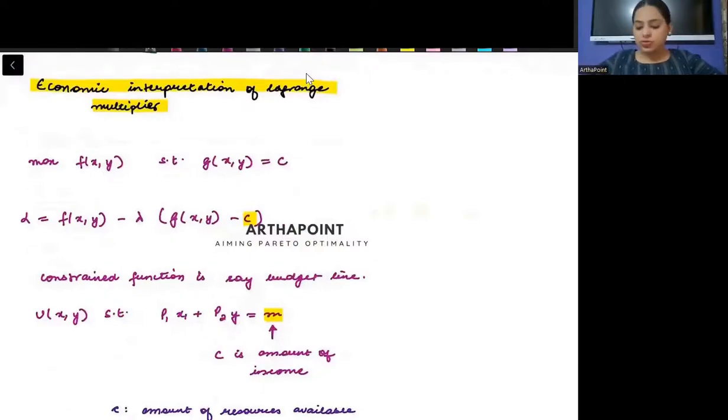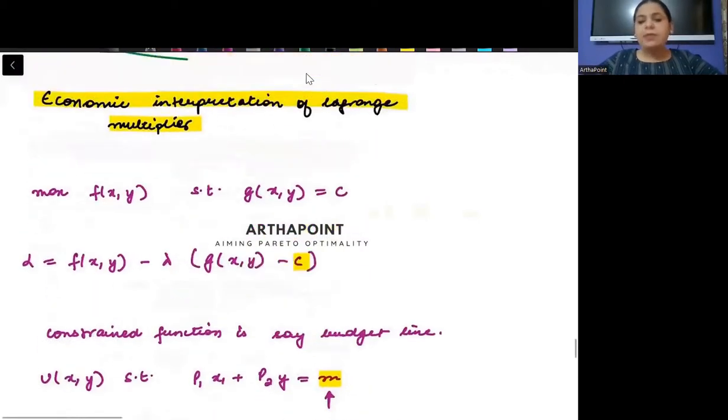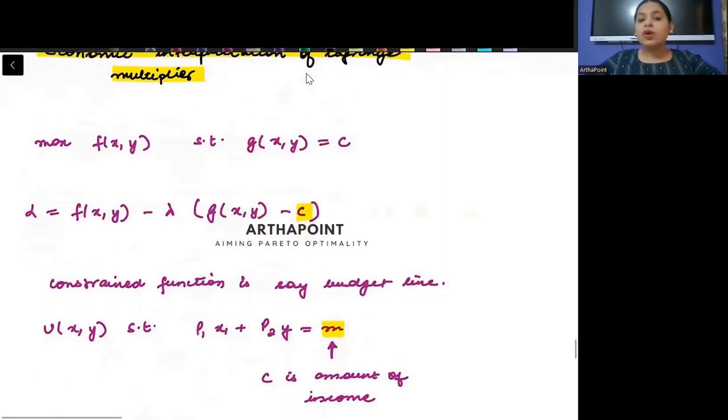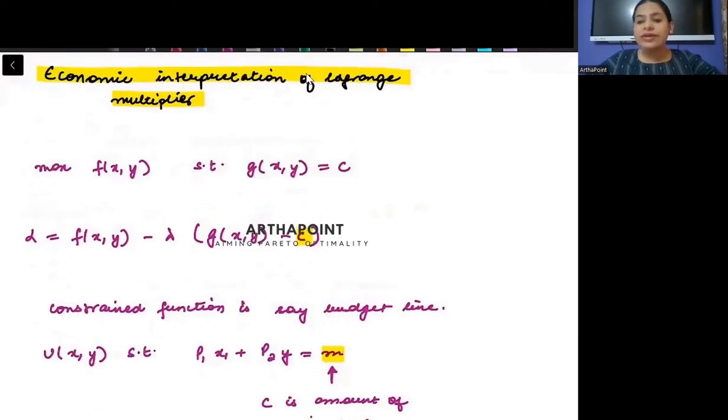Now, this is the most important aspect. Abhi tak, we have been continuously talking about lambdas - lambda 1, lambda 2, lambda here, lambda there. But what is this lambda really? How can I economically interpret this lambda? What does this lambda mean? That is also important.